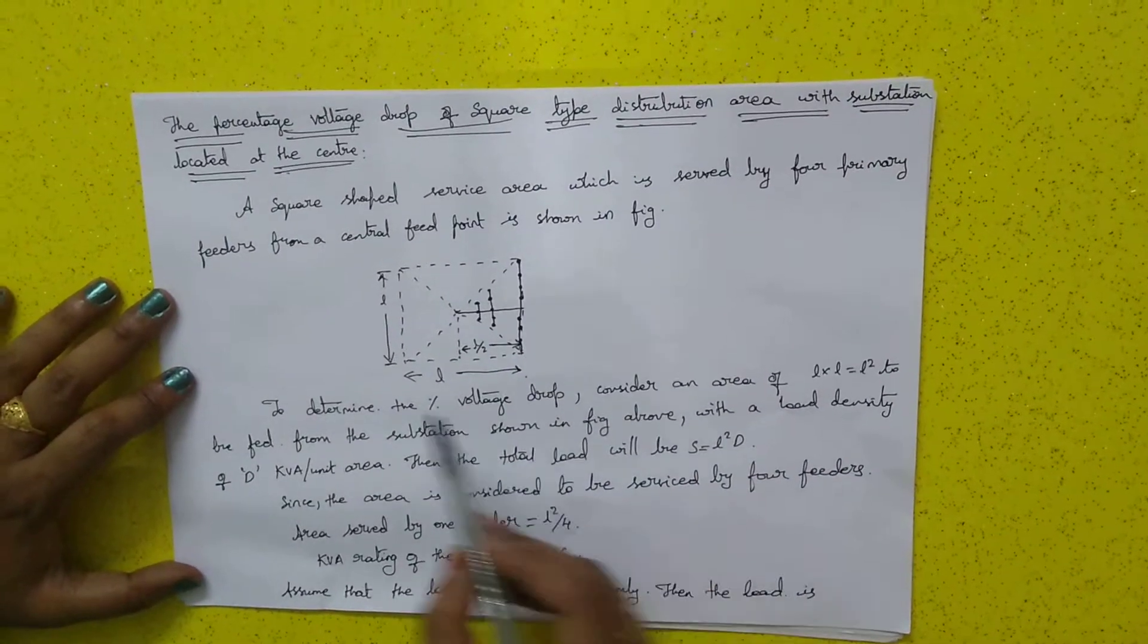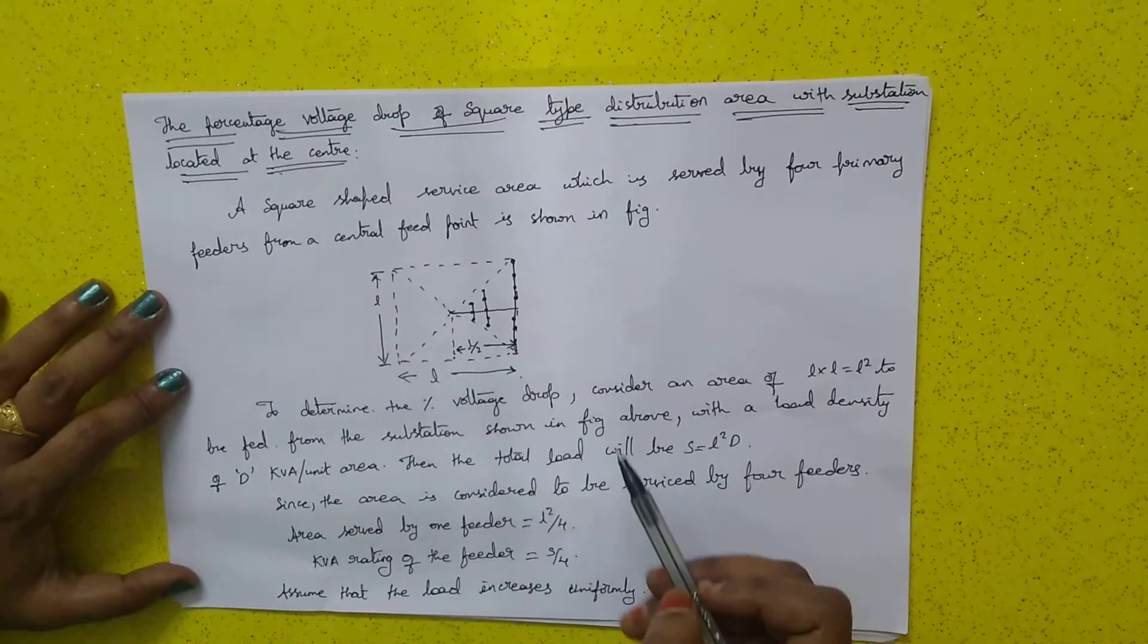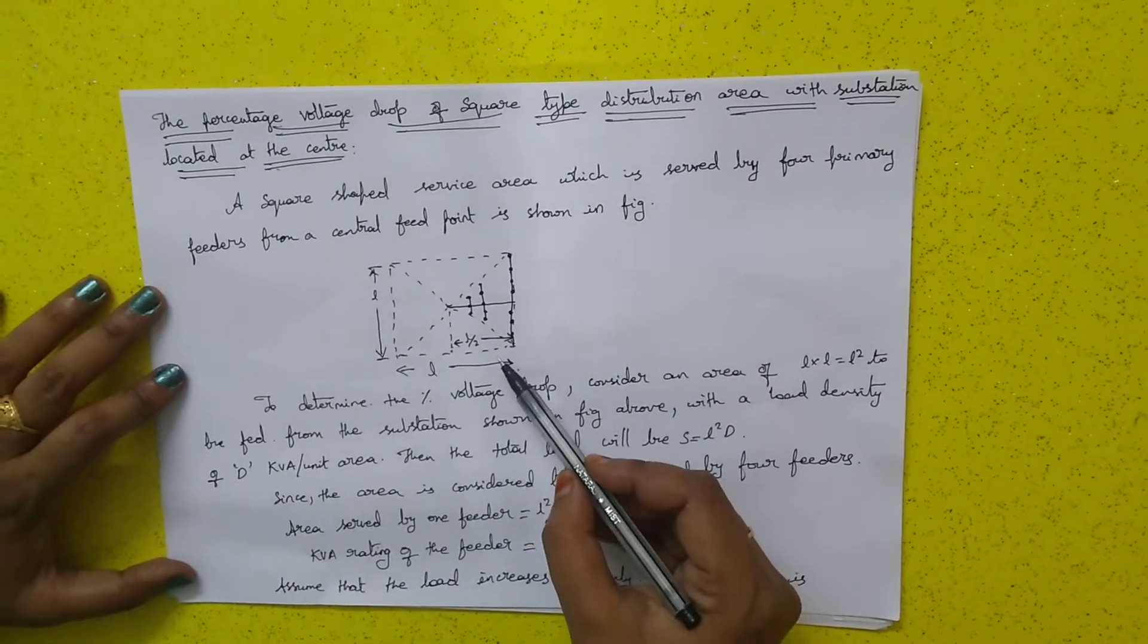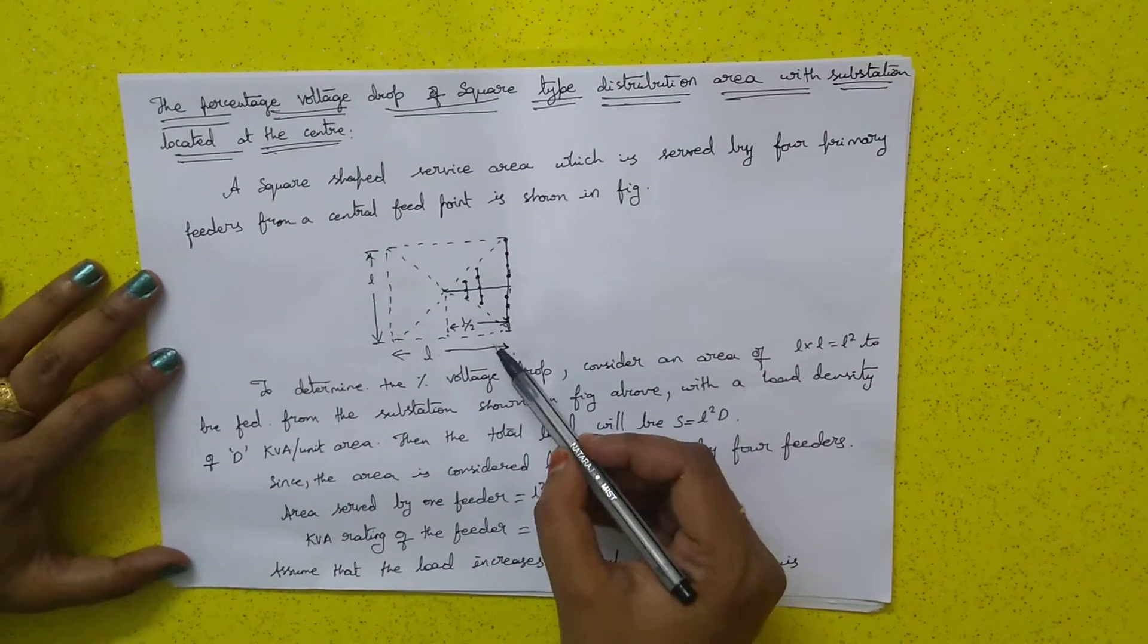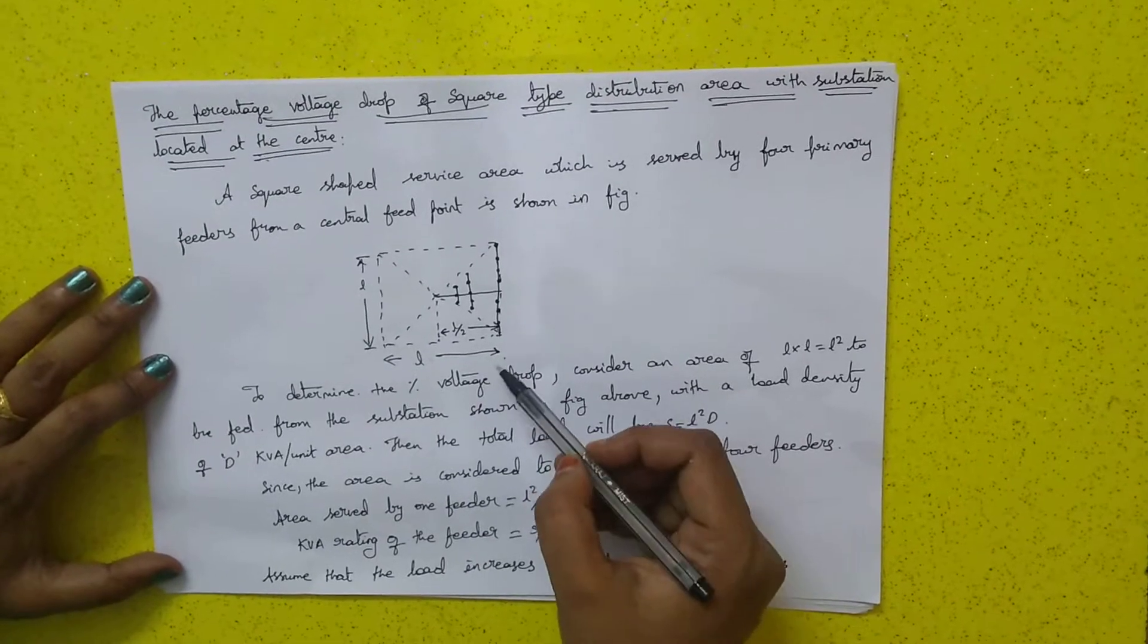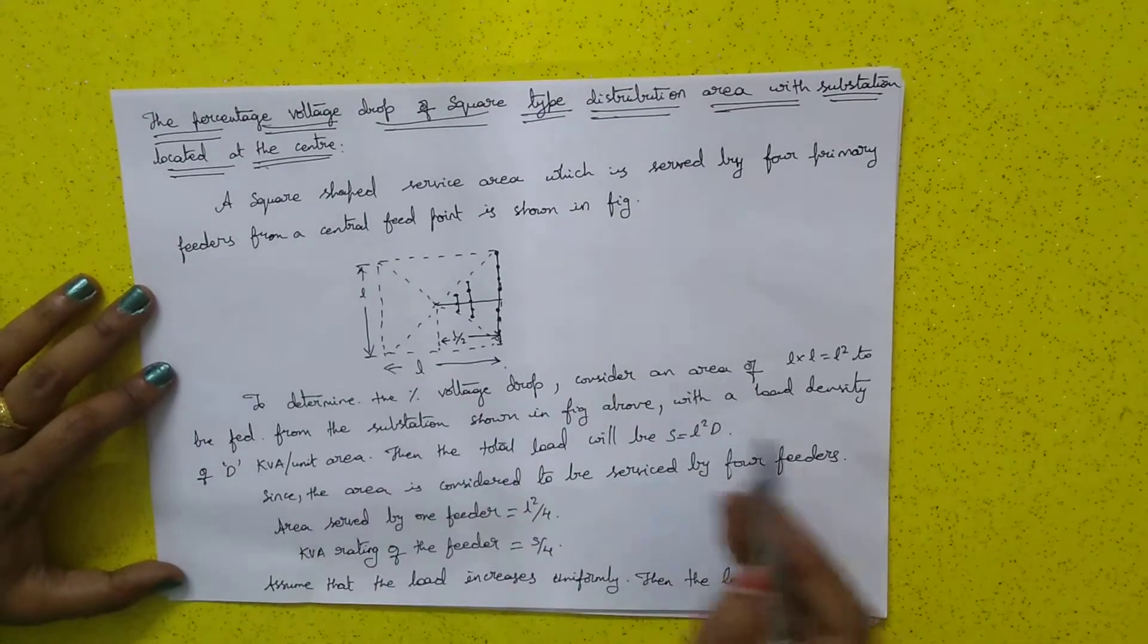Since the area is serviced by four feeders, the area served by one feeder will be L-square by 4, and the kVA rating of this feeder will be s by 4. Assume that the load increases uniformly.